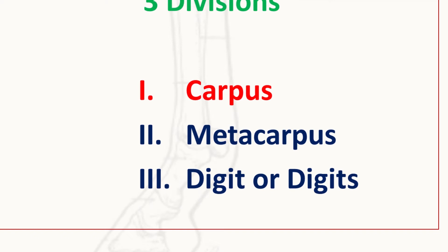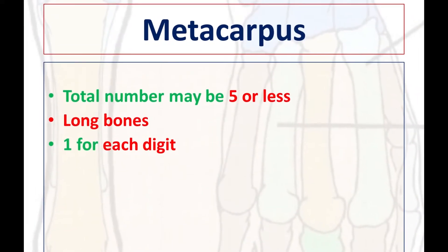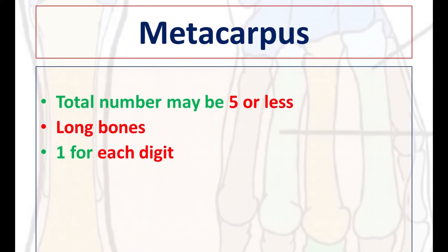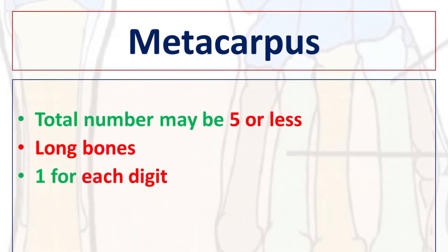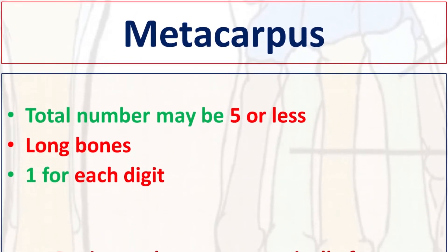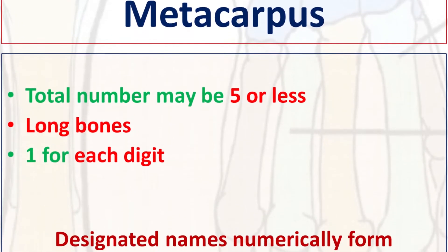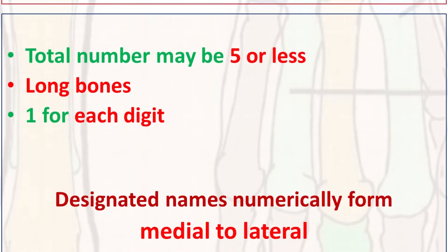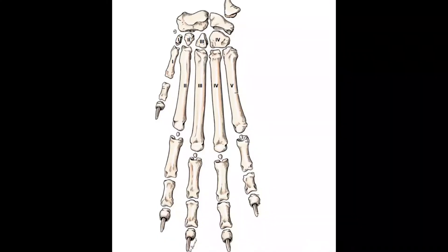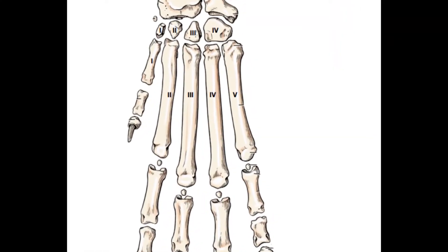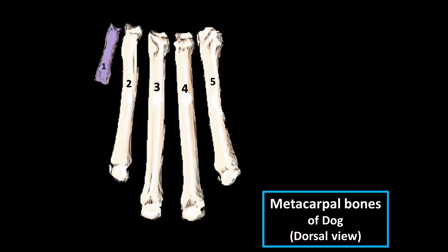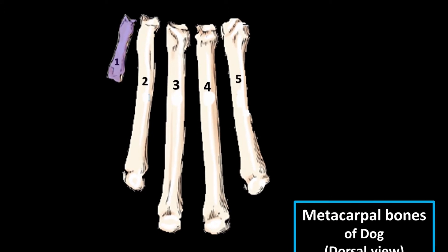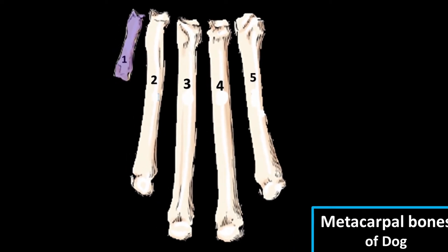Metacarpal bones are long bones. All five metacarpal bones are present in the dog. The numbering of these bones starts from medial to lateral. As we discussed about the distal row of the carpal bones, the first one is much smaller, as you can see, while the third and fourth are the largest.